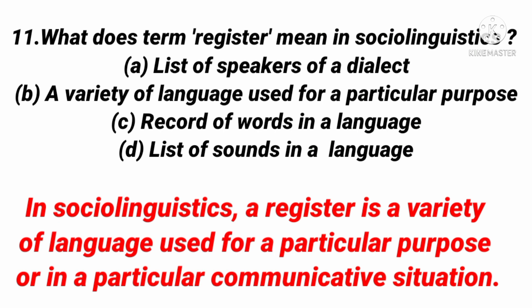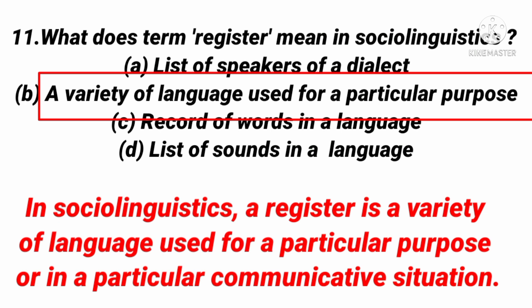The next question: What does the term 'register' mean in sociolinguistics? The right answer is a variety of language used for a particular purpose. In sociolinguistics, a register is a variety of language used for a particular purpose and in a particular communicative situation. For example, English is used differently in fields like law, religion, science, medicine, and sports — each field has its own register.